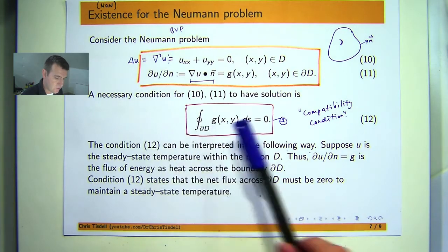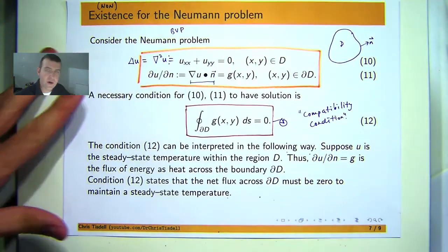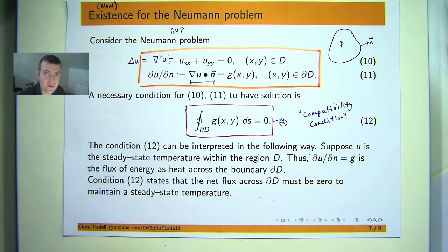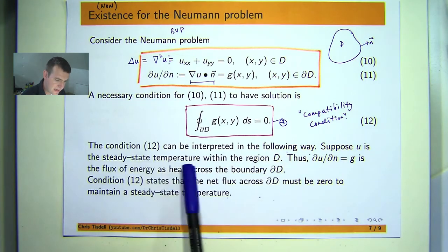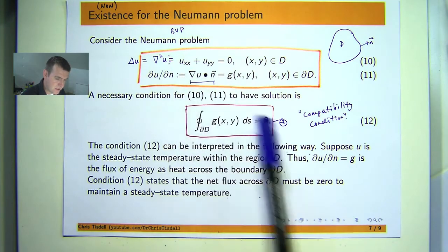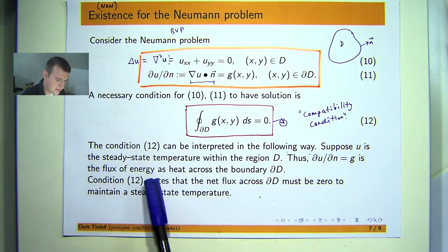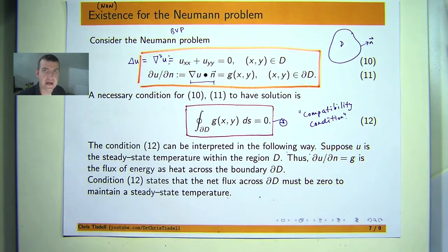Now how can I interpret equation 12 in a physical setting? Well Laplace's equation arises when for example you're looking at a heat equation which is at steady state. In other words, u depends on position x and y only and not time t. In this case du/dt equals zero, so we come up with Laplace's equation. Suppose u is a steady state temperature within the region D. What does this boundary condition represent? Well this boundary condition represents the flux of energy as heat across the boundary of D. Condition 12 states that the net flux across the boundary must be zero to maintain a steady state temperature. If it wasn't zero then the heat would change with time so it wouldn't be a steady state situation.